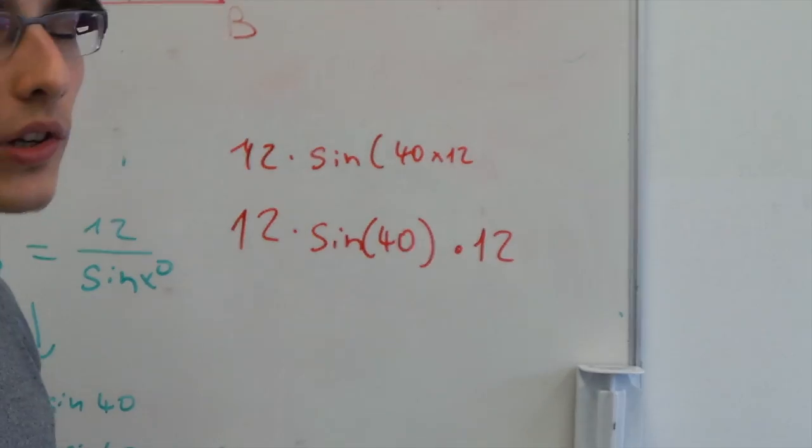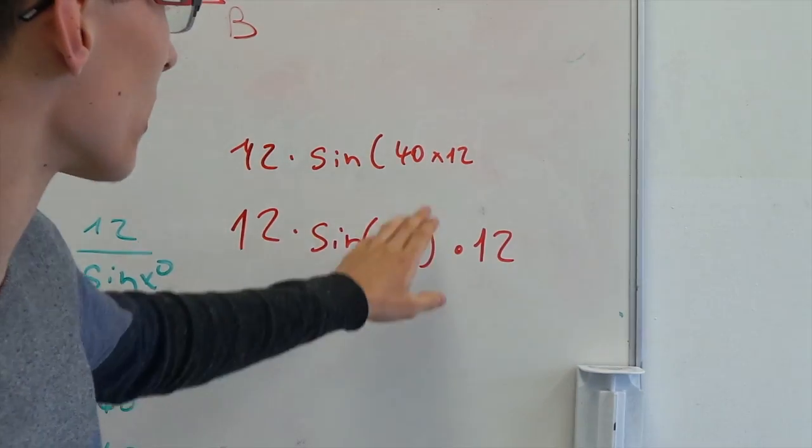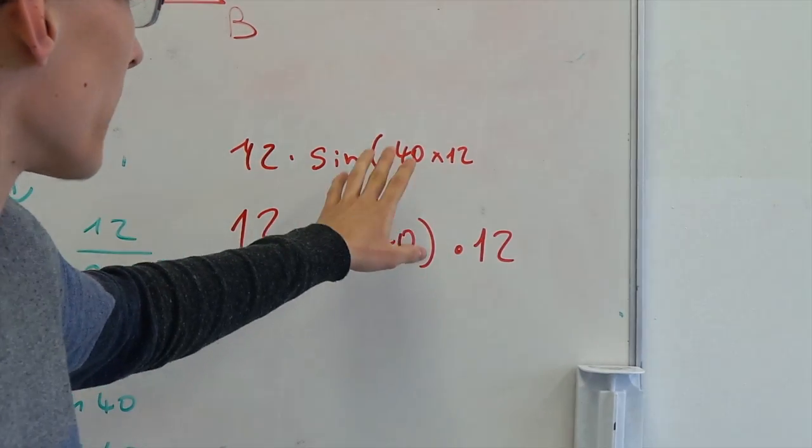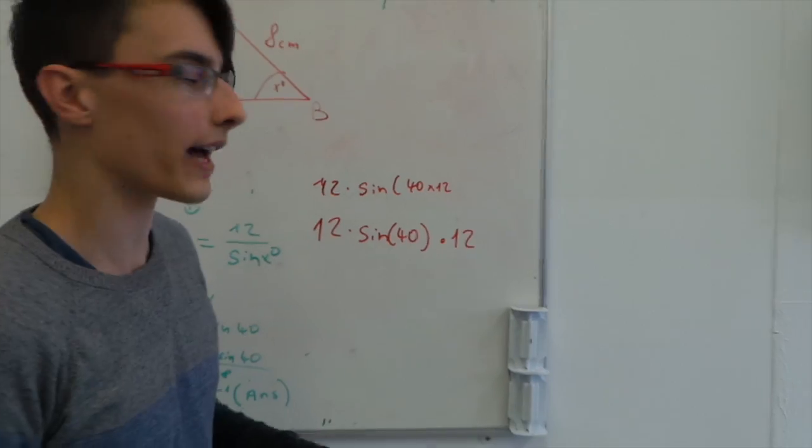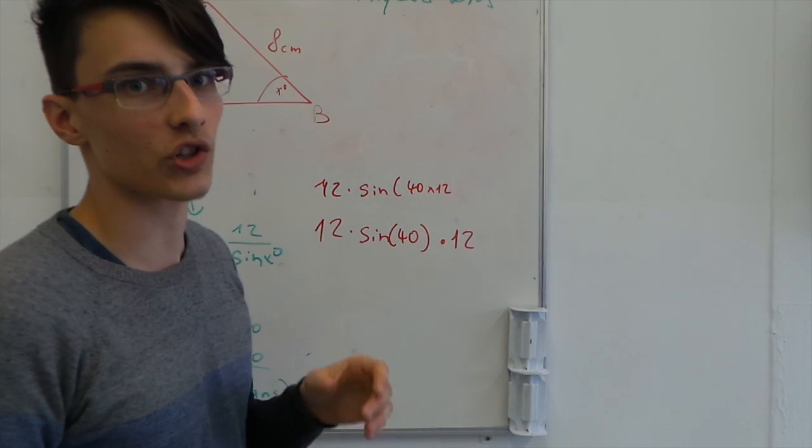So, if you put it into the calculator without a bracket behind 40, it's going to multiply the 40 inside the sine times 12, and the whole result will come out as 10.8, which is incorrect.